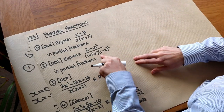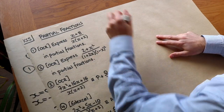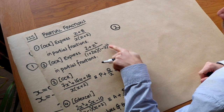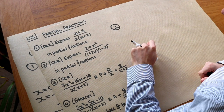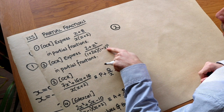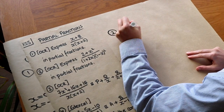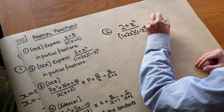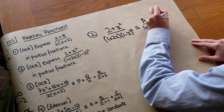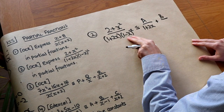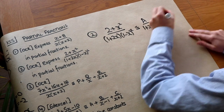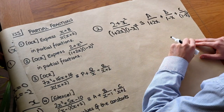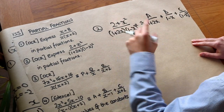The second example is a bit harder because we've got a repeated factor. Whenever we have a squared factor, we need a fraction without the square and a fraction with the square. So we write A over (1+2x) as identical to B over (1−x) plus C over (1−x)². We then do the same thing as before and multiply through by the whole denominator.